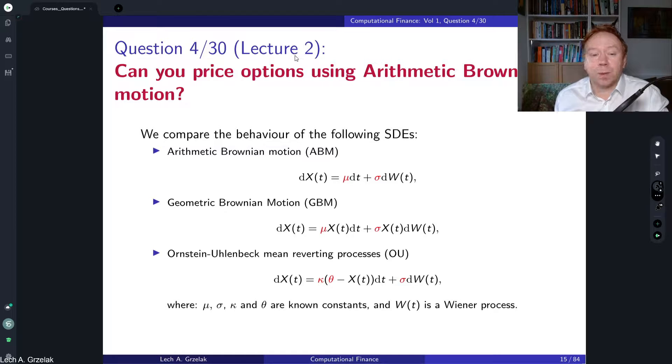Arithmetic Brownian motion is a process defined here which is slightly different than what we have seen before for geometric Brownian motion, the process used for pricing options, for example using the Black-Scholes model. The big difference lies in the volatility and drift. So here is the volatility term and drift.